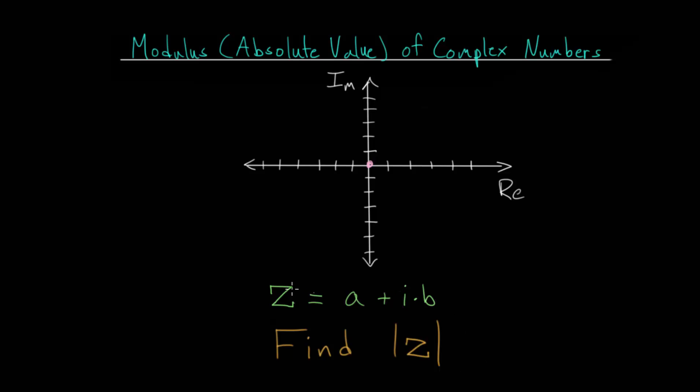With this number z, we can plot it anywhere on the complex plane. So let's say we put it in quadrant two, but this derivation would work in any of the quadrants. We can say that this is the real part of z, and we call that a.